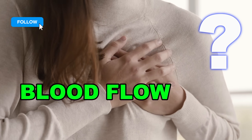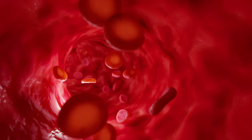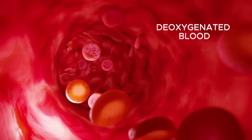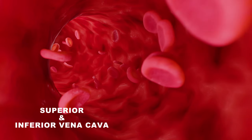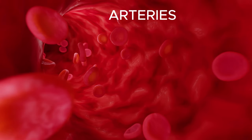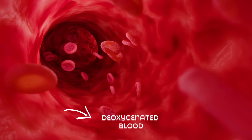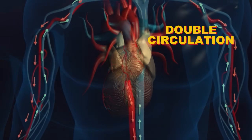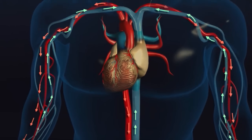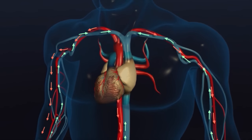Blood flow in the human body is a continuous, life-sustaining cycle. It begins in the right atrium, where deoxygenated blood arrives from the entire body through the superior and inferior vena cava. Arteries carry oxygen-rich blood away from the heart to the body; veins carry oxygen-poor blood back toward the heart. Humans and other mammals have a double-circulation type of blood flow, meaning blood passes through the heart twice in a single complete cycle around the body.